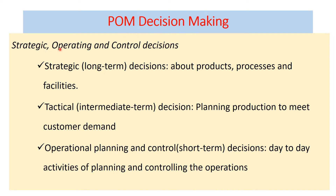Decision-making in operation management can be categorized into three: strategic, operating, and control decisions. The strategic one is the long-term decision, which focuses mainly on selecting products, designing products, and selecting processes and facilities. The second is tactical, conducted by middle-level managers — intermediate-term decisions focused mainly on planning production to meet customer demand. The last one is operational planning and control, conducted by lower-level managers — short-term, day-to-day activities of planning and controlling operations.